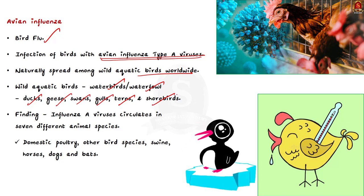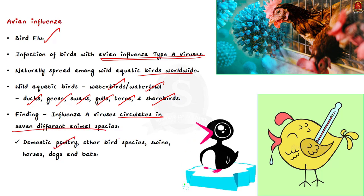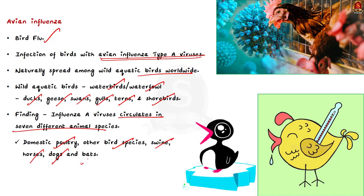Influenza A viruses have been detected and are known to circulate in seven different animal species or groups. This includes domestic poultry, other bird species, swine, horses, dogs, and bats.